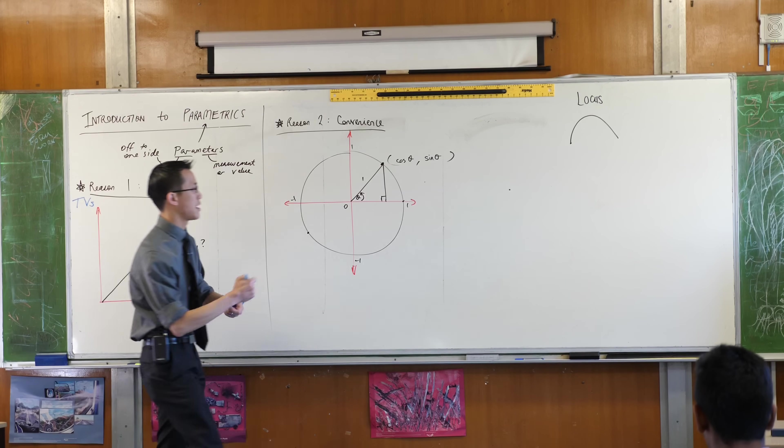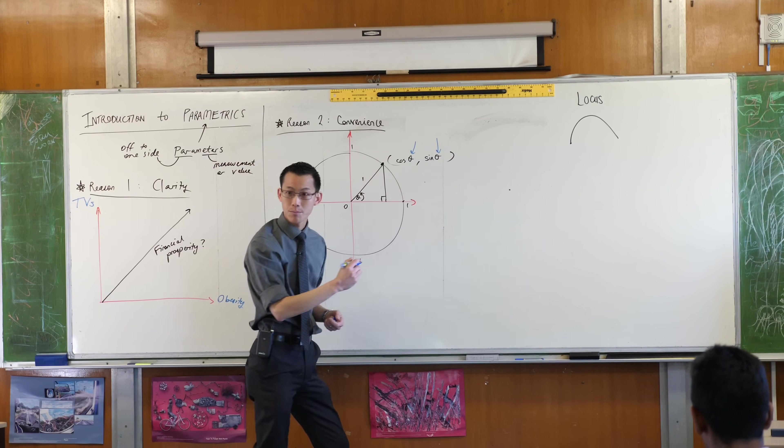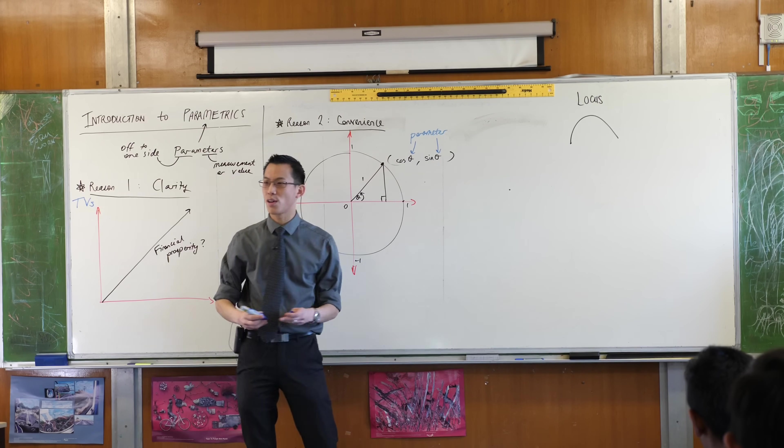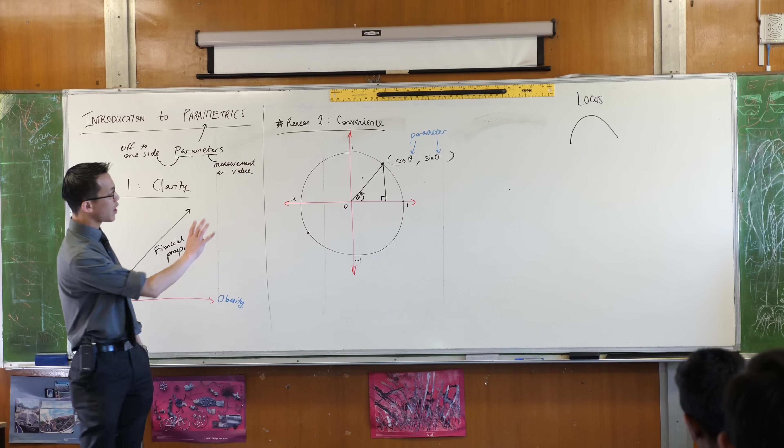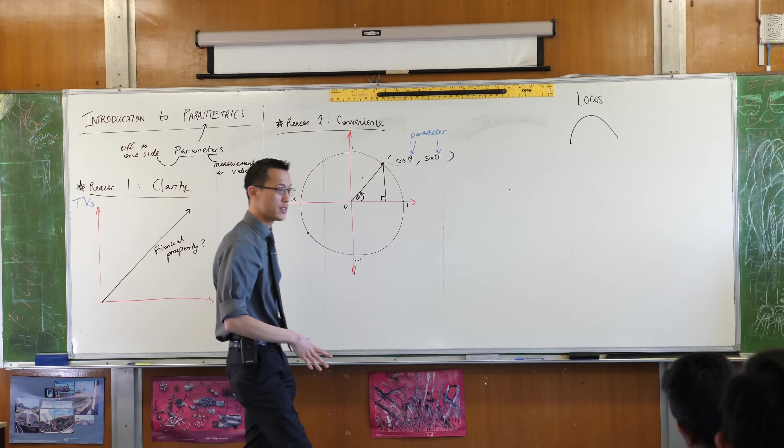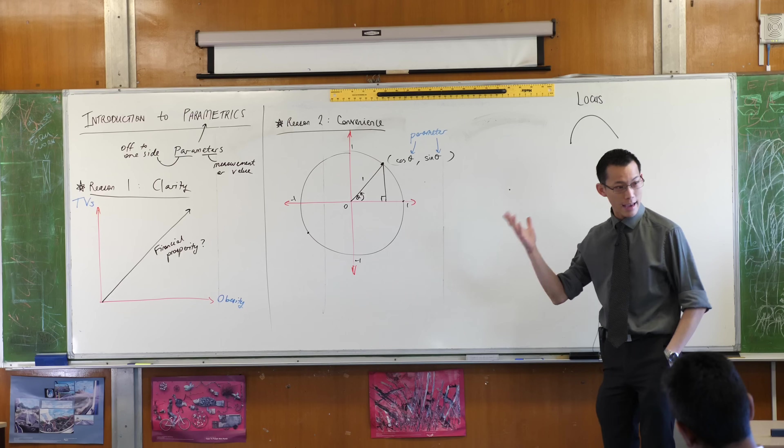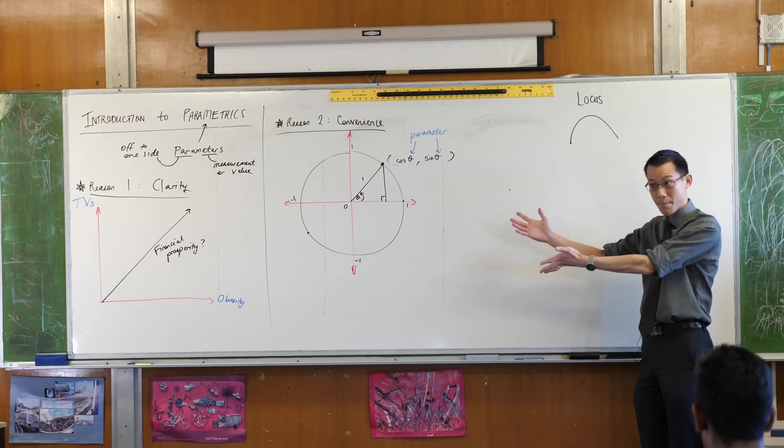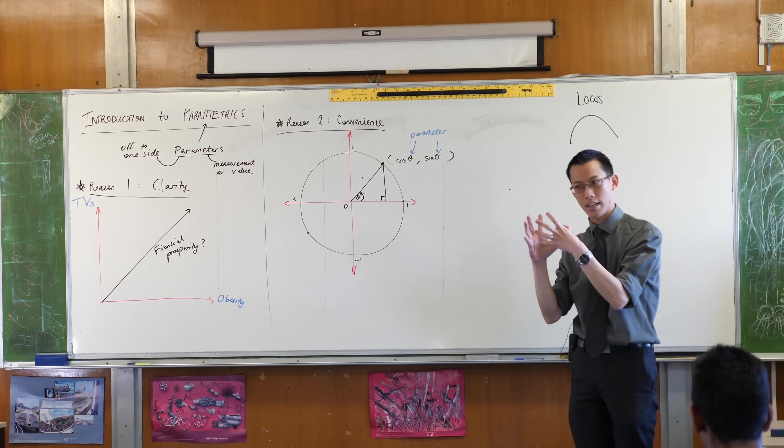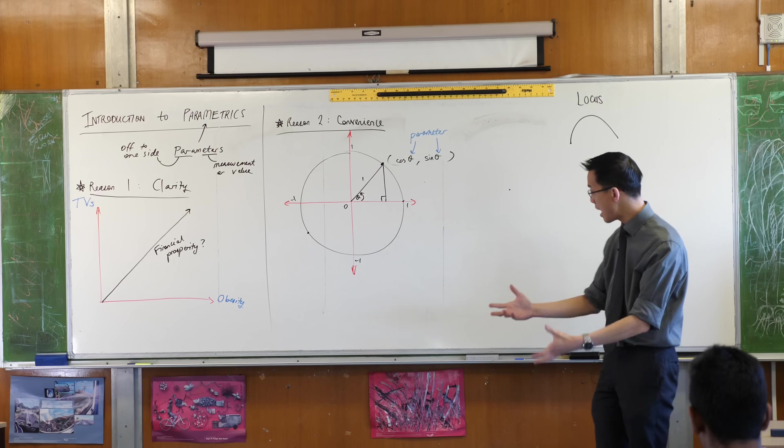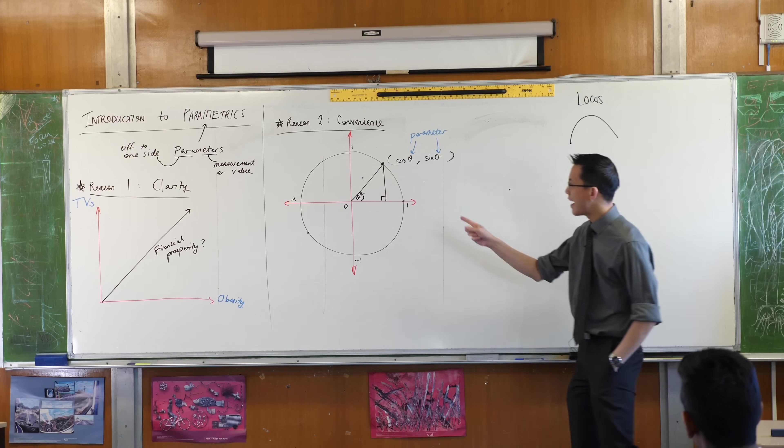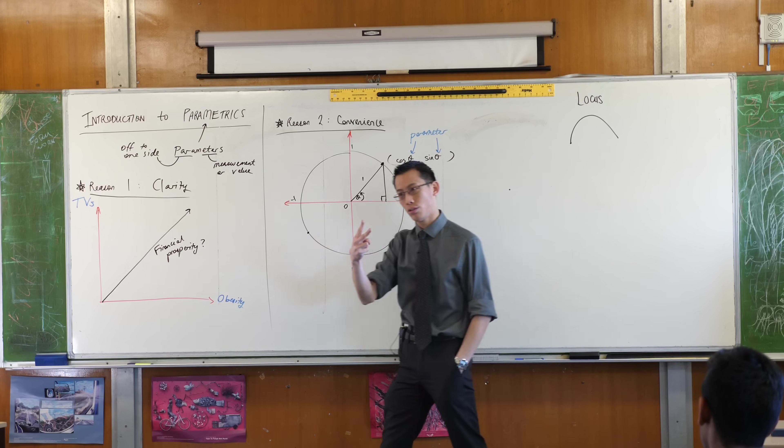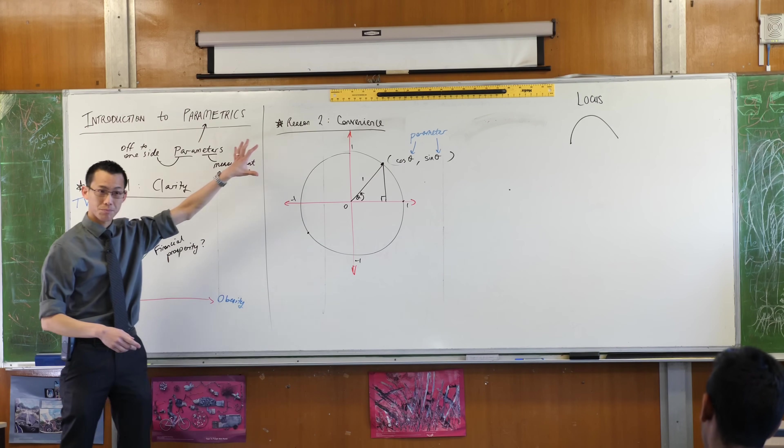Just re-emphasizing this guy here theta, it's the parameter and the reason why having it is convenient is because now I can describe any point on the circumference of this circle and instead of supplying two values an x and a y I can just supply you with one with the parameter. I can say a hundred and eighty nine degrees and everyone can tell me where that is. I told you one number and you were able to locate where that was. You don't need two you only need one that's clearly more convenient.